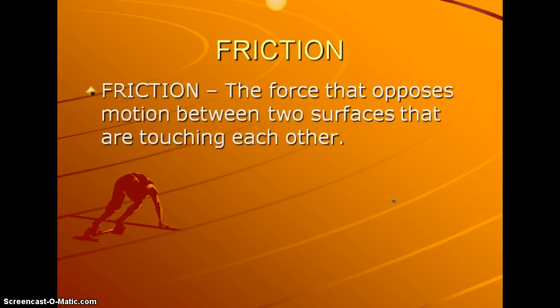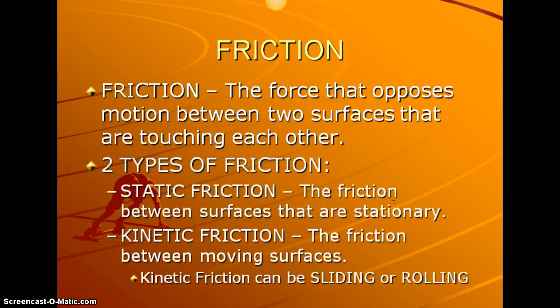Going over friction just a little bit more, it is a force that opposes motion between two surfaces that are touching. We have two types. Static, which is friction between surfaces that are stationary, and kinetic, friction between moving surfaces. So it can be sliding or rolling when we're looking at kinetic friction. Obviously, something that's rolling has less friction. It's easier to move something that's on wheels versus something that does not have wheels.